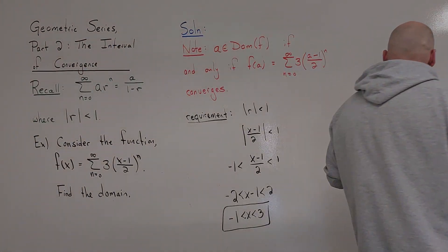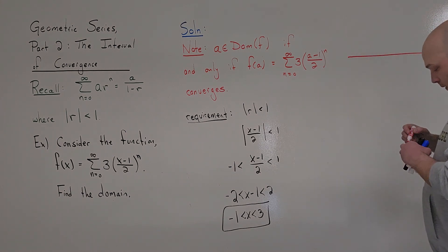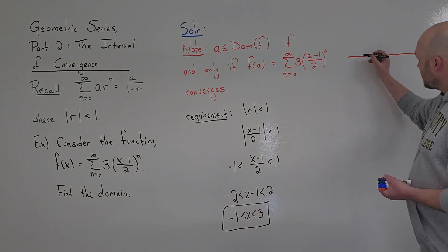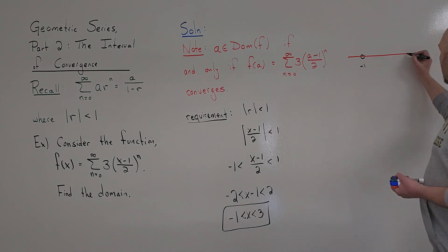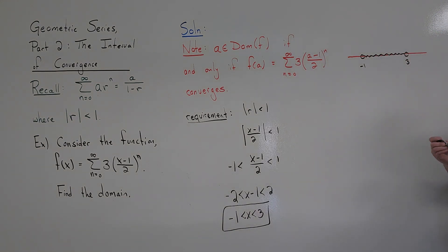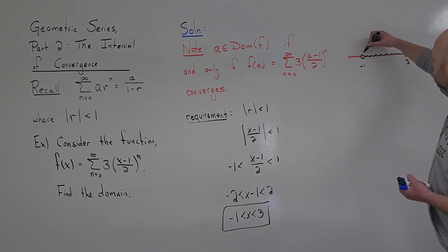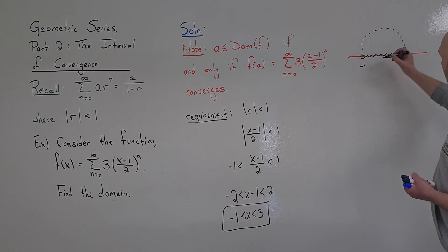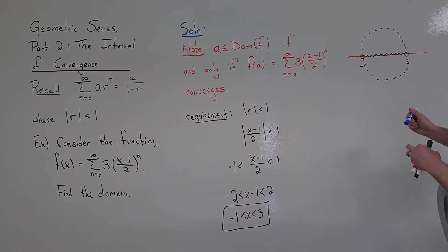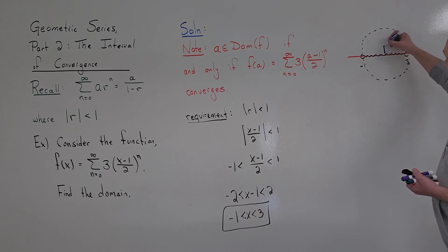I want to look at that interval on the number line. Negative 1 I can't include, 3 I cannot include, but the domain consists of everything in between. Now, imagine a circle where this interval lies along the diameter — in particular, an open circle.